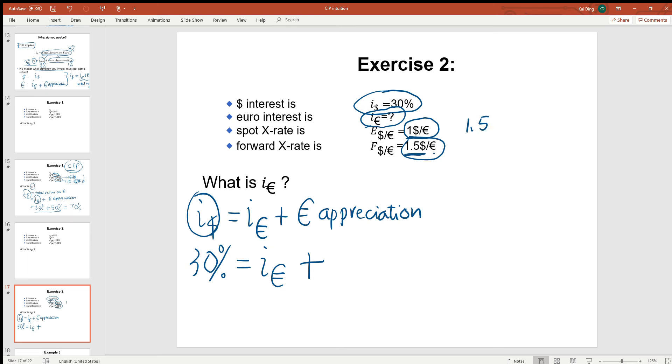We have a 50% appreciation of EUR over time. So from this equation, we can read off that IEUR has to be equal to 30% minus 50%, which is negative 20%.